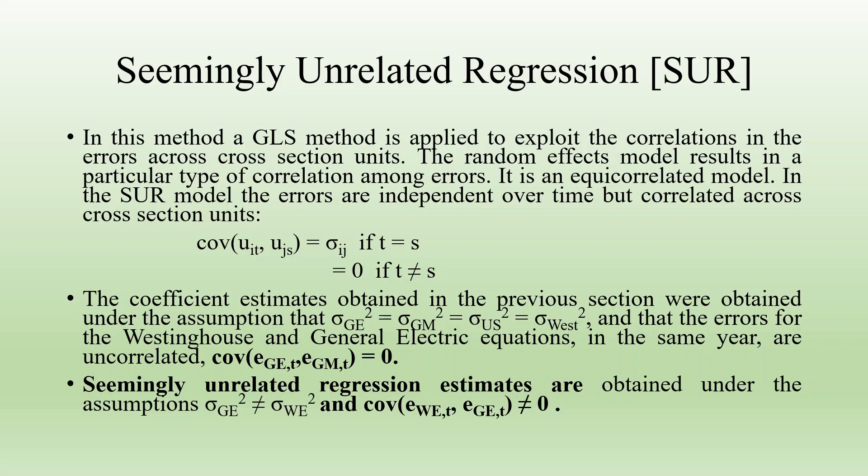In seemingly unrelated regression, a GLS method is applied to exploit the correlation in the errors across the cross-section units. The random effect model results in a particular type of correlation among the error terms. It is an equi-correlated model.